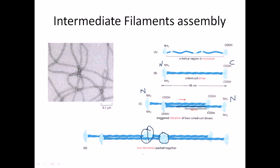Two tetramers will pack together to finally make a filament. These filaments attach with each other, they stack one by one to finally make a filament structure. This is an electron micrograph showing the intermediate filament assembly.